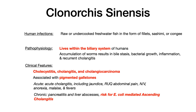Now let's talk about clonorchis sinensis. Human infection occurs when humans eat raw or undercooked freshwater fish, typically in the form of fillets, sashimi, or kanji. Pathophysiologically, clonorchis sinensis lives within the biliary tree of humans. The worm gets into the biliary tree, causing a mass effect resulting in bile stasis, promoting bacterial growth and inflammation, and leading to recurrent cholangitis.